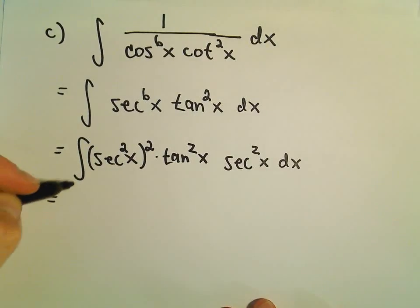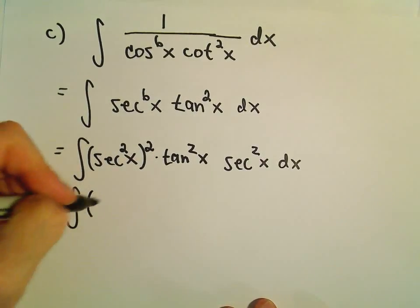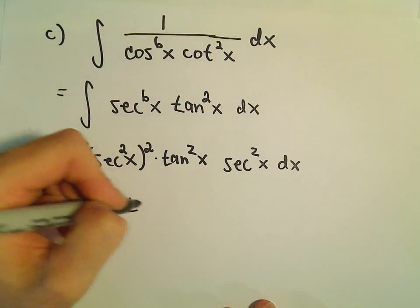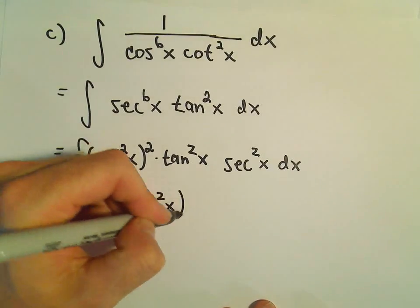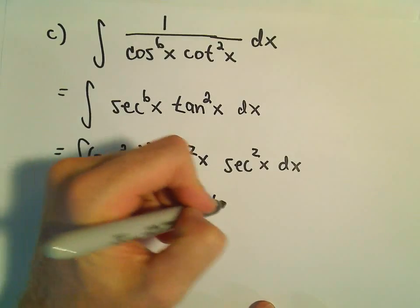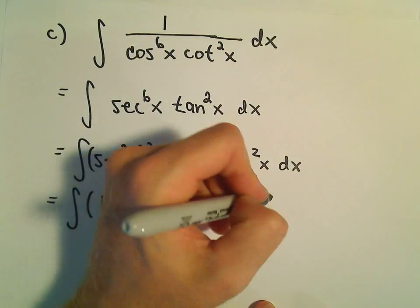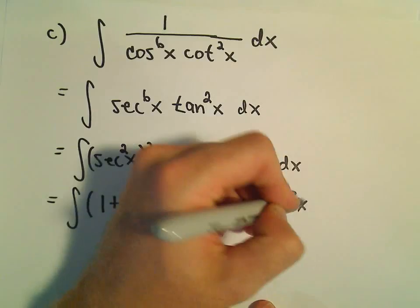Now we'll use our identity. We can replace secant squared with 1 plus tangent squared x. That's being squared, and then we have tangent squared x times secant squared x dx.